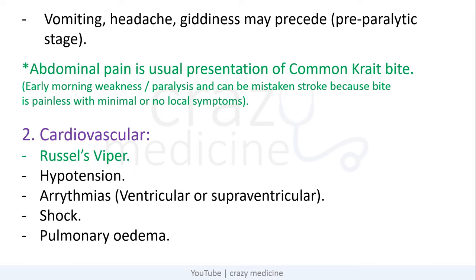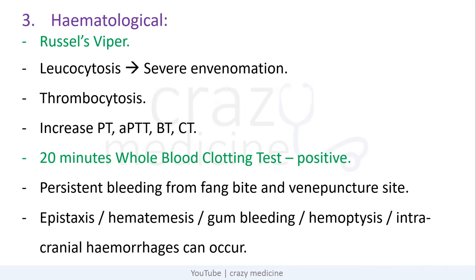Next is cardiovascular toxicity, caused by Russell's viper. Symptoms may include hypotension, arrhythmias which can be ventricular or supraventricular, and the usual cause of death is shock and pulmonary edema. The next is hematological toxicity, also caused by Russell's viper venom. It causes leukocytosis indicating severe inflammation, thrombocytopenia, and increase in PT, APTT, BT, and CT. There is a positive 20-minute whole blood clotting test. There can be persistent bleeding from the fang bite or venipuncture site, and other bleeding manifestations like epistaxis, hematemesis, and gum bleeding.